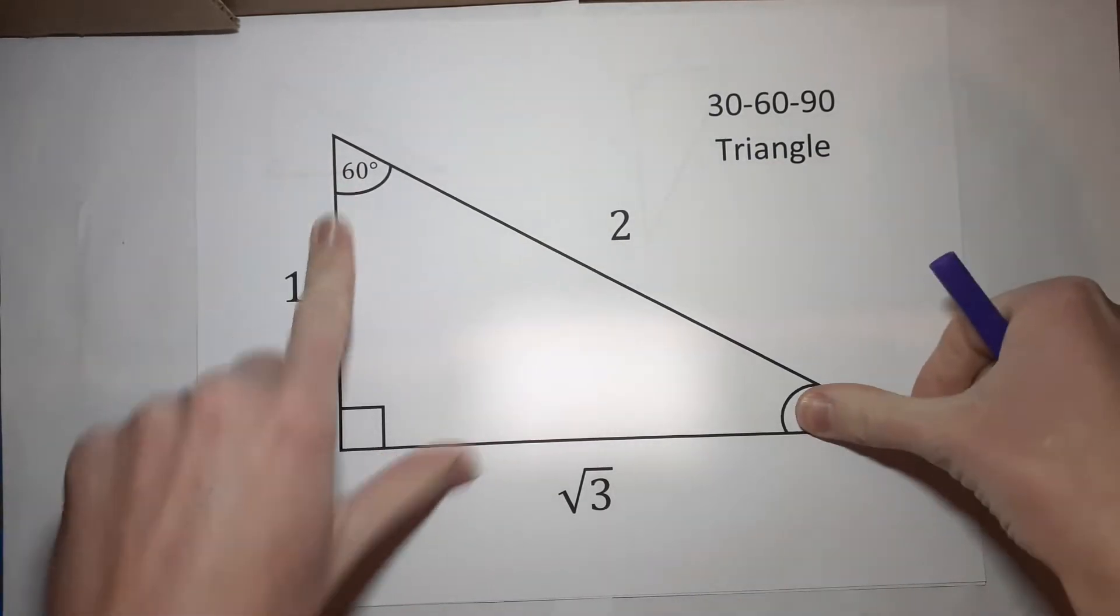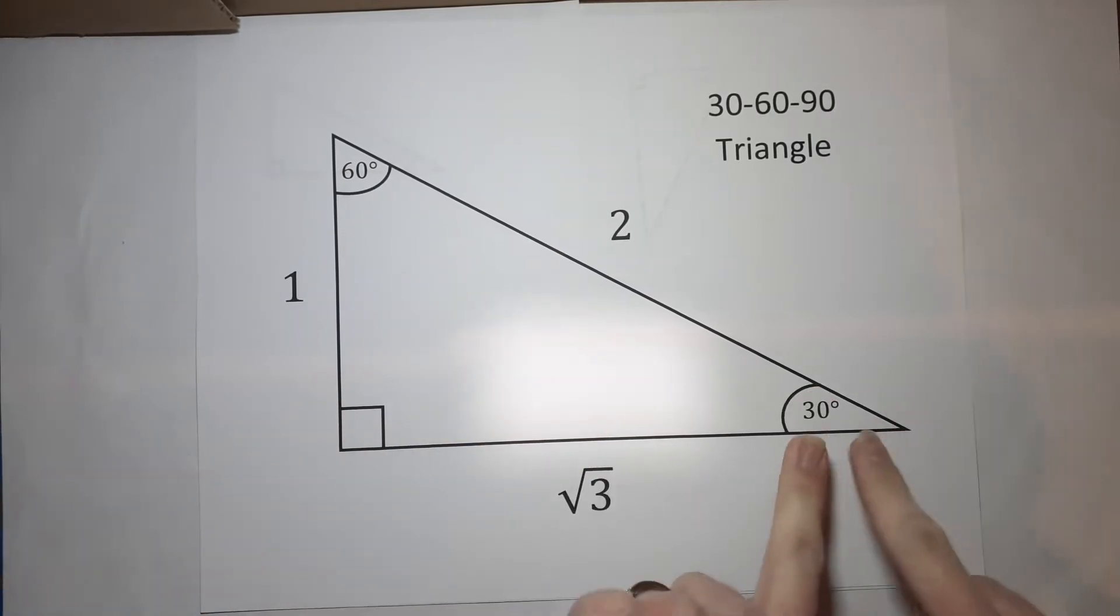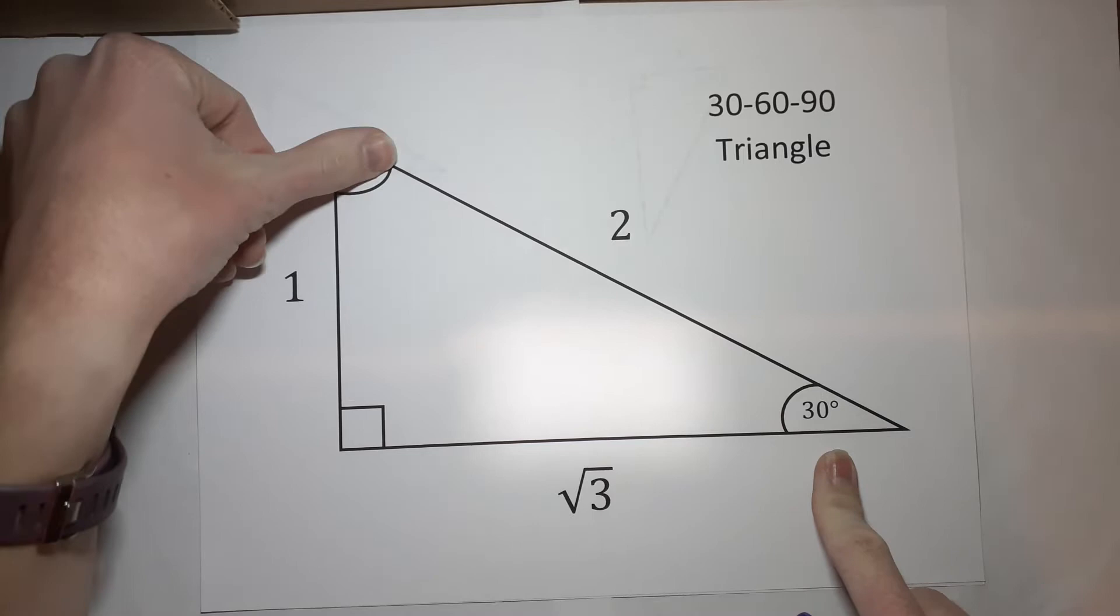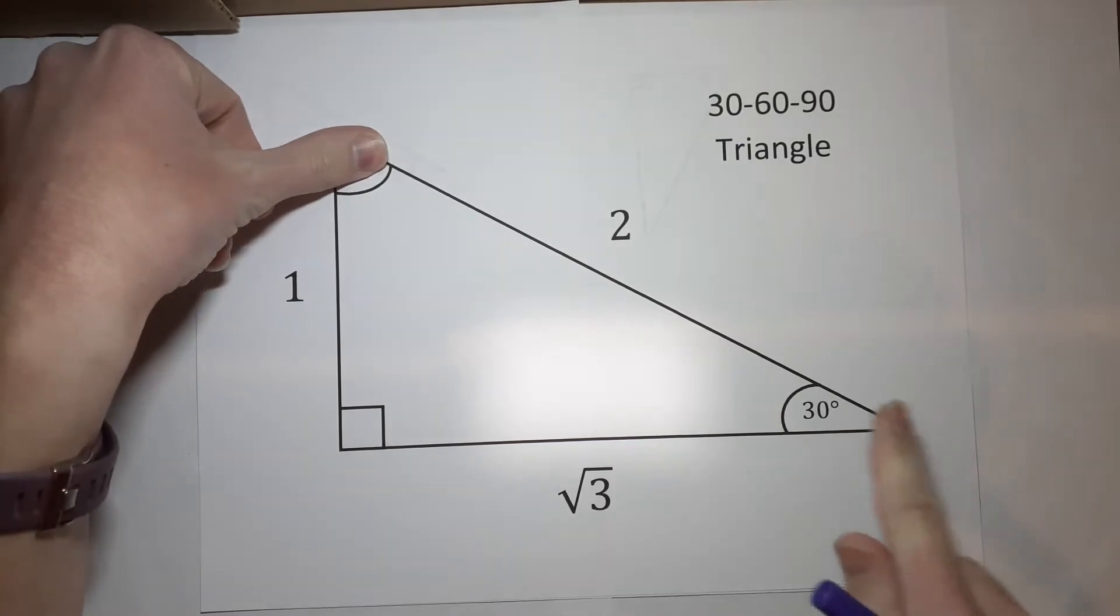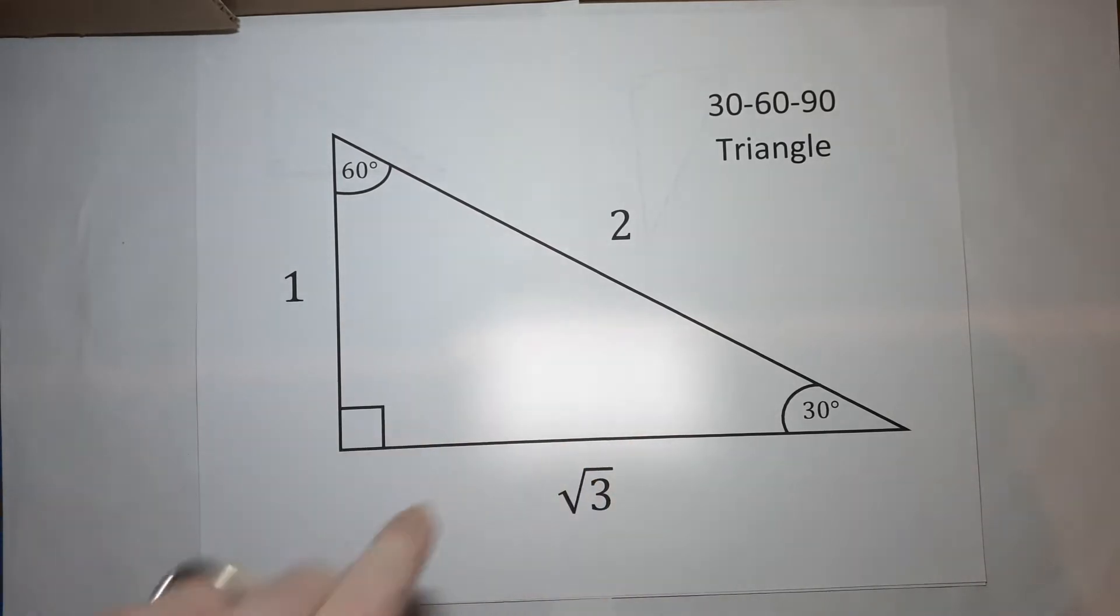So, if you just knew 60 and 90, you're going to know, even if they didn't tell you that this one's 30. Same, if you didn't know the 60 degrees, they told you 30 and 90, you'll know that one's 60 by subtracting these two from 180.